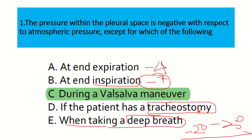So when taking a deep breath it becomes more negative, not positive. And in the case of a tracheostomy, changes only affect the conducting zone due to bypassing the upper respiratory system. Our final answer is: during the Valsalva maneuver — intrathoracic pressure increases and intrapleural pressure also increases and becomes positive. Stay tuned with the channel by subscribing. Thank you.